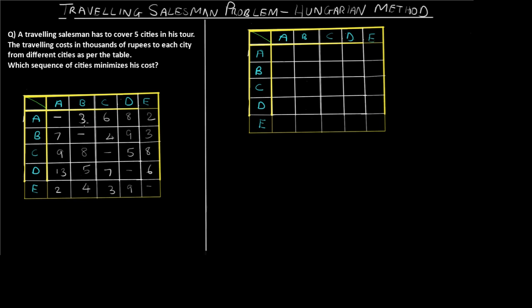I have written the values of the cost — this is in thousands. For example, for a salesman to travel from A to B the cost is 3 (i.e., 3000), from A to C it is 6000, and A to D is 8000. The values are not symmetric — A to B may differ from B to A — because the salesman might take a different route.